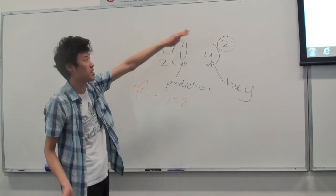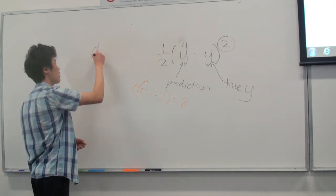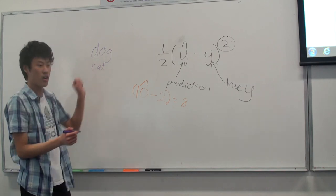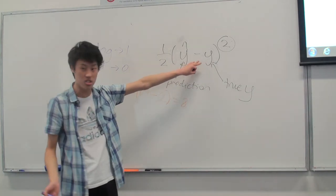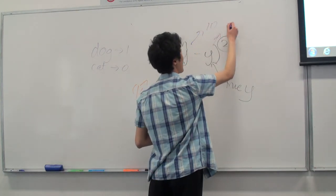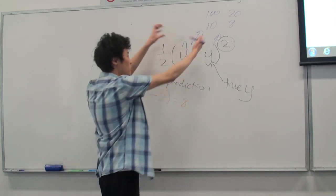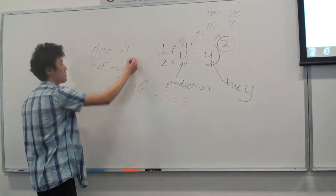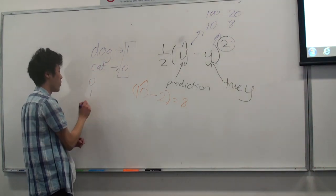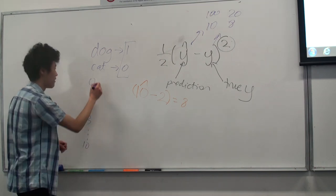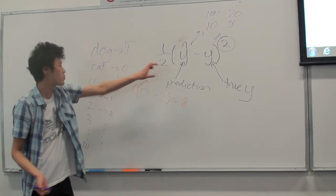Image classification has classes. We want to classify if the image is a dog or a cat — a dog can be 1 and a cat can be 0. But we can't just use this formula because it's for continuous variables like 10 and 8 or 100 and 20. Instead, we need to devise a new method to compute a cost for binary variables or classes like digit 0, 1, 2, 3, all the way to digit 10.